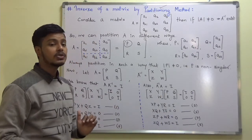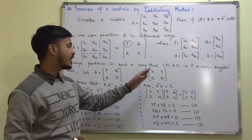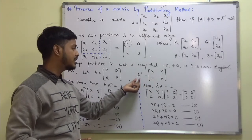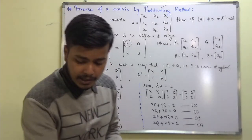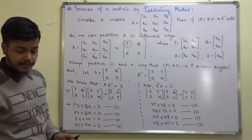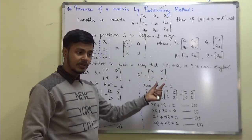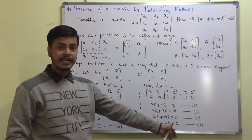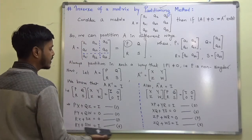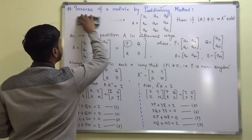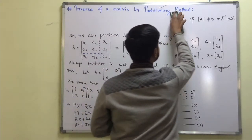Now we have eight equations and four unknowns X, Y, Z, and W. I can use these eight equations to get X, Y, Z, and W. Four equations are enough to get the values of X, Y, Z, and W.